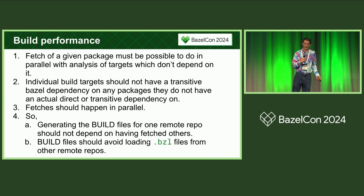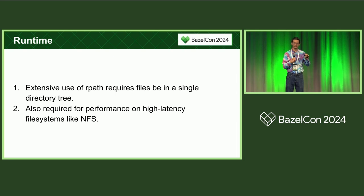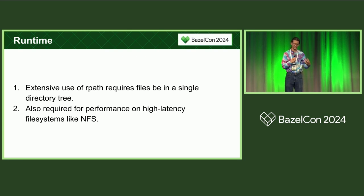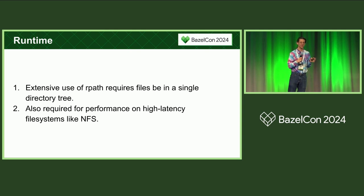We need to generate the build file for each package without reference to anything outside of that package. At runtime, that runs into a problem where Conda uses RPATH for everything for shared libraries, which means everything needs to actually end up in a common shared directory — that's in conflict with having each package untarred into its separate remote repository. So we have a central repository rule that copies everything into one place. This is also important for Python performance, because each entry on the Python path requires stat calls that add up fast on NFS.